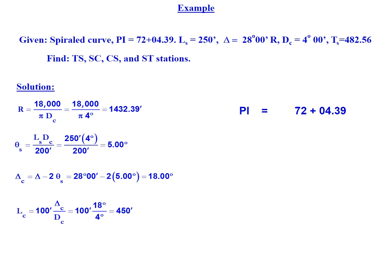We can also find the length of the circular curve: 100 feet multiplied by 18 degrees over 4 degrees will give us a length of curve of 450 feet.